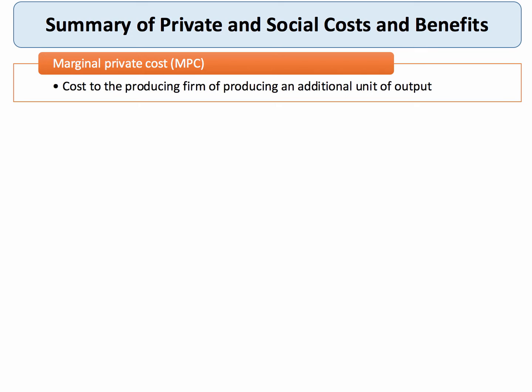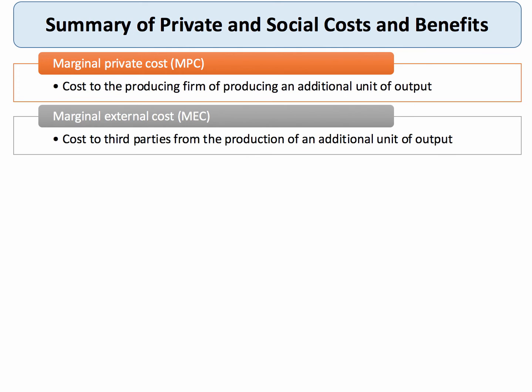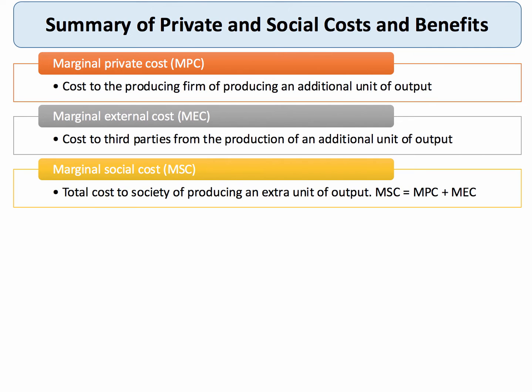Marginal private cost is the cost to the producing supplier of supplying an extra unit of production. The marginal external cost is the cost to a third party from an additional unit of production. The marginal social cost is the cost to society of the extra unit, and the formula is: MSC equals the marginal private cost plus the marginal external cost.